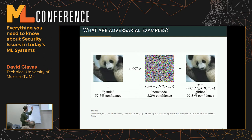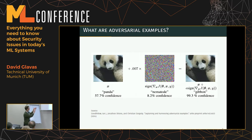We start with a natural example — something drawn from the same distribution as the training data, so the model is supposed to perform well on it. Then we add carefully crafted noise — not random noise — onto it, modifying the pixels of the original image. The model then gives answers that don't make sense.